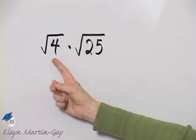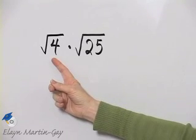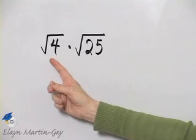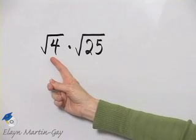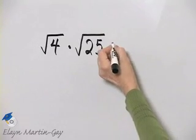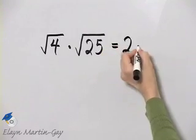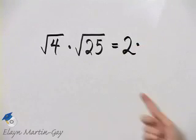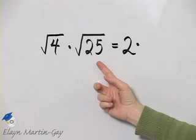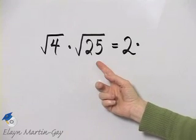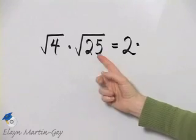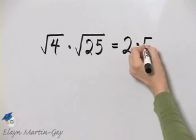What is the square root of 4? It is a number that, when multiplied by itself, gives an answer of 4. So because 2 times 2 is 4, the square root of 4 is 2. What is the square root of 25? I'm looking for a number that, when multiplied by itself, gives an answer of 25. Because 5 times 5 is 25, the square root of 25 is 5.